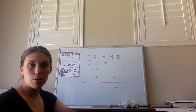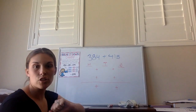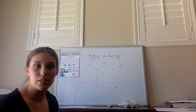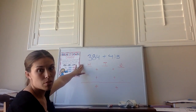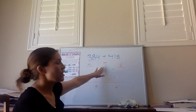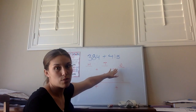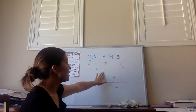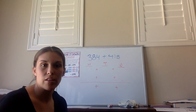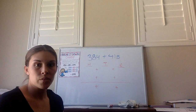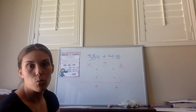Our first problem is 384 plus 415. I made a nice chart over here just to organize my work so it's easier to add up the hundreds, tens, and ones columns when it's time. This column is representing the hundreds, the T is representing the tens, and the O is representing the ones. This chart is going to be something similar that you will be seeing later on in the lesson when you do your independent practice work, so I'm going to model with it here.